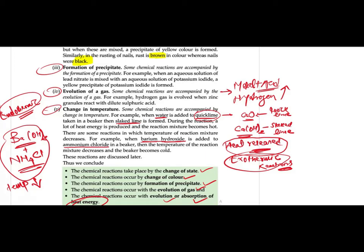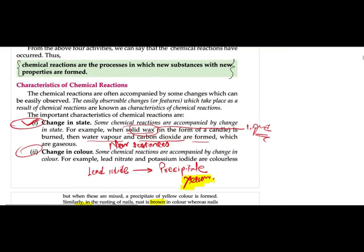Quick lime is calcium oxide; slaked lime is calcium hydroxide, and heat is released — that makes it an exothermic reaction. But barium hydroxide when added to ammonium fluoride, the temperature of the mixture decreases and the beaker becomes cold — so it's an endothermic reaction where heat is absorbed and temperature goes down.